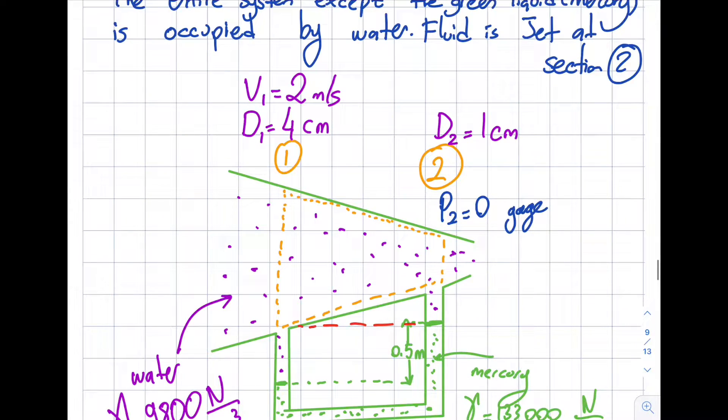All right, so the next step is to assess which basic principles am I going to use. The first basic principles is the conservation of mass. So do I need the conservation of mass for this particular question? The approach that I take is I look at my velocity in area.